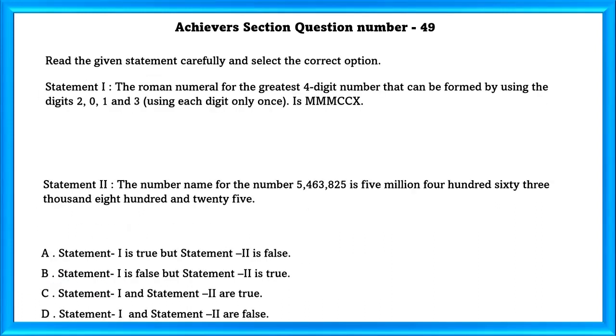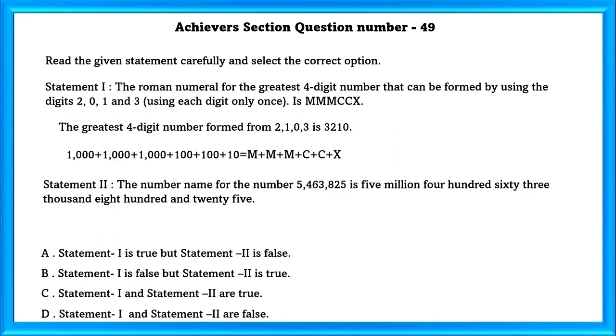Achiever section question number 49. Read the given statement carefully and select the correct option. Statement 1. The Roman numeral for the greatest four-digit number that can be formed by using the digits 2, 0, 1 and 3 using each digit only once is MMMCCX. The greatest four-digit number formed from 2, 1, 0, 3 is 3,210. That is 1000 plus 1000 plus 1000 plus 100 plus 100 plus 10 which is equal to M plus M plus M plus C plus C plus X. That is correct.